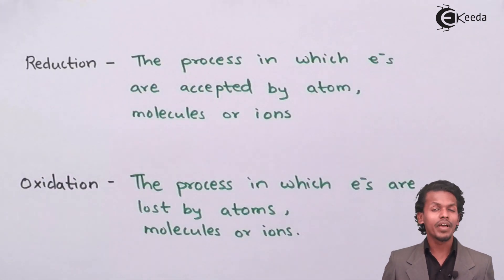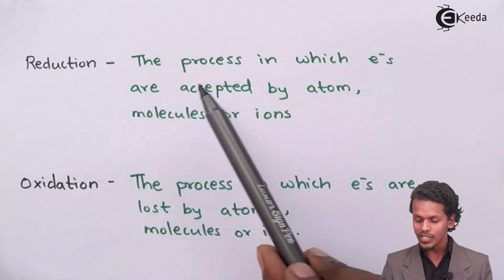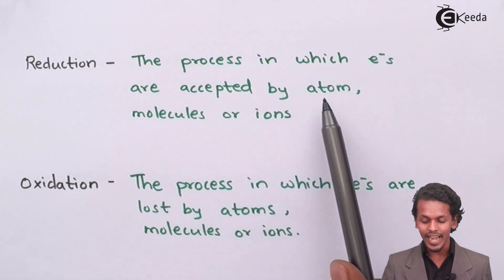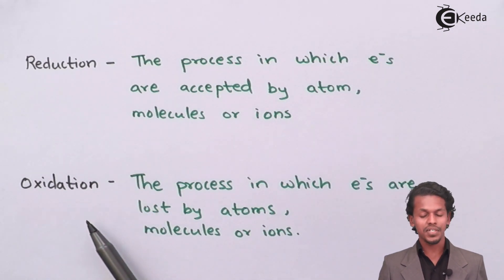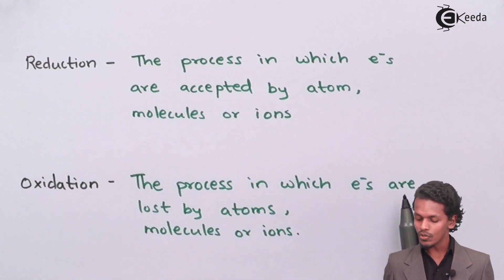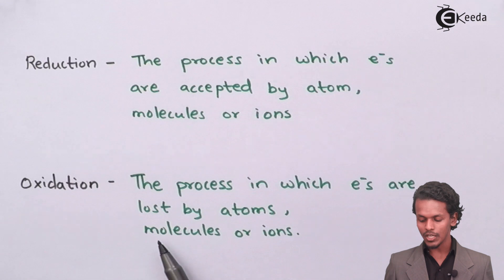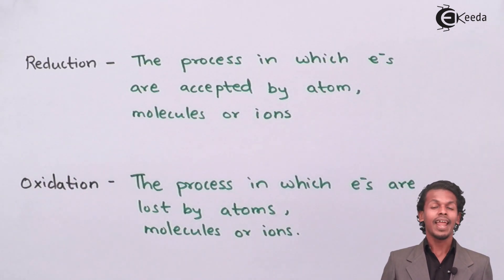When I talk about reduction, it means the process in which electrons are accepted by atoms, molecules or ions. Oxidation is the process in which electrons are lost by atoms, molecules or ions.